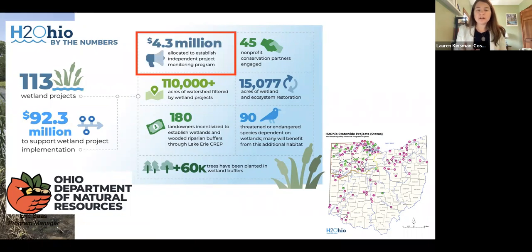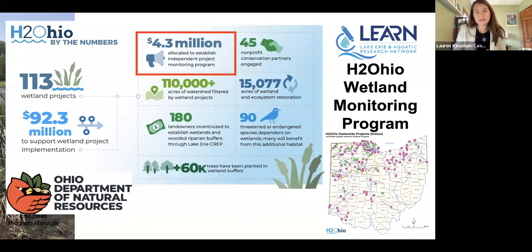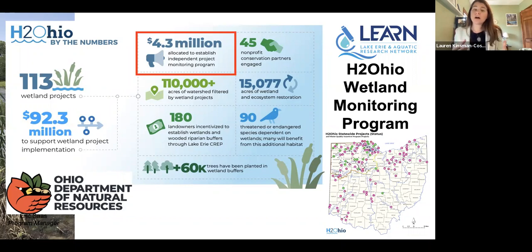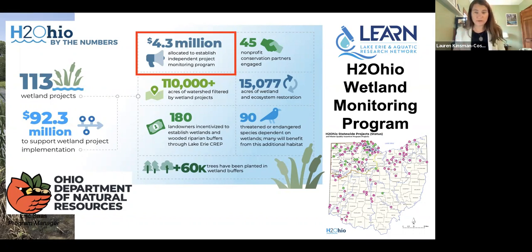The ODNR has allocated a healthy portion of their budget to establish an independent monitoring program to understand the effectiveness of their wetland restoration projects. To do that, they've contracted with members of LEARN — the Lake Erie and Aquatic Research Network — a large consortium of researchers throughout Ohio and elsewhere that study Lake Erie and other aquatic ecosystems. The H2Ohio Wetland Monitoring Program is one project within LEARN, implemented by several LEARN scientists.